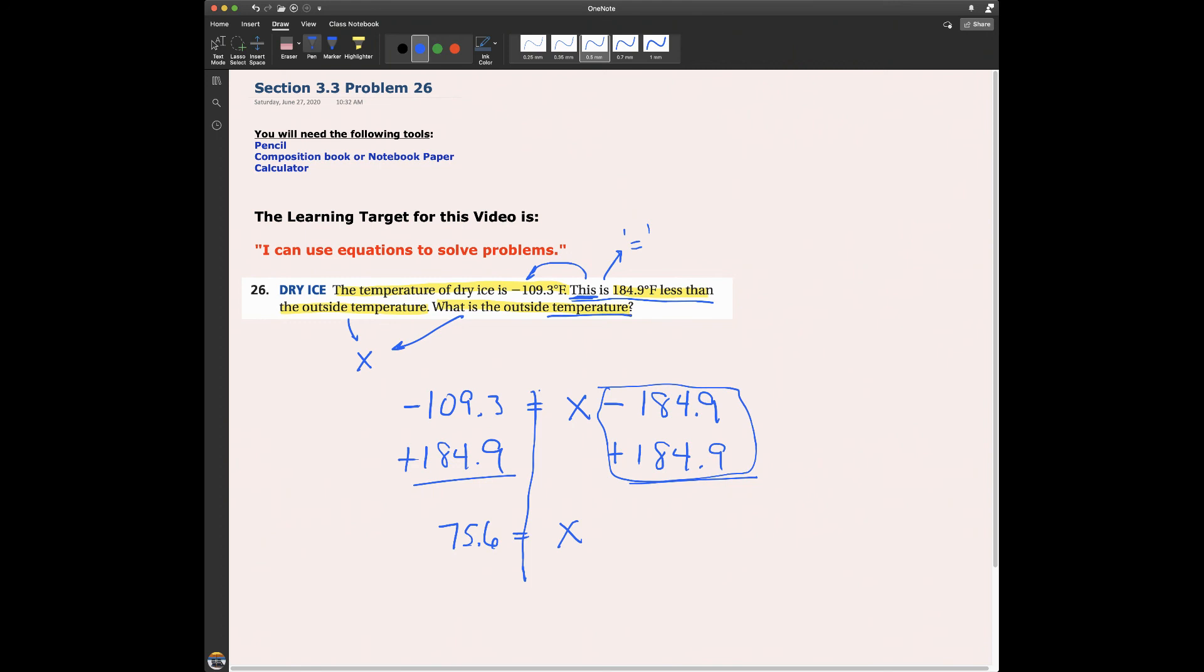So it says, what is the outside temperature? So I need to make sure I include the units here. So the answer is going to be x equals 75.6 degrees Fahrenheit. So that is the answer to this problem. And notice how we set up an equation to help us to solve this.